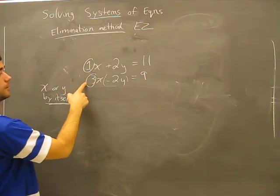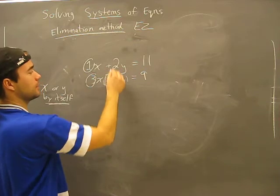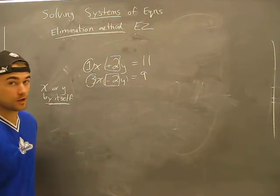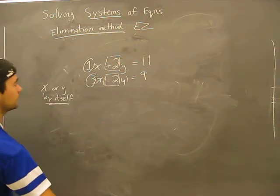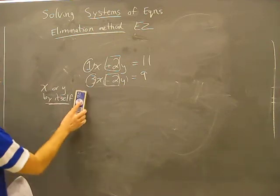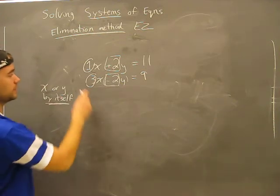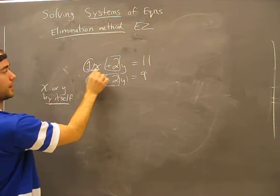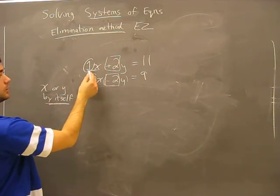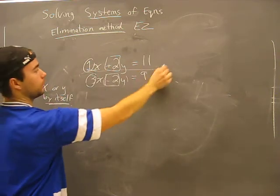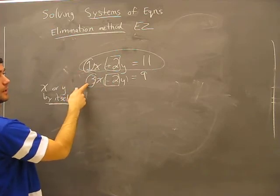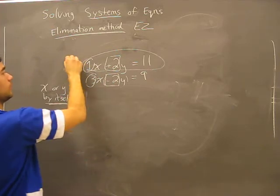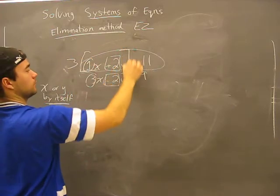The trick to eliminating is you want to get the coefficients to be the same number. I have a 1 there and a 3 there. I have a negative 2 and a positive 2 here, they're not the same, don't get fooled. What I'm going to do, the easiest way to do is find the one that has a single 1. What I'm going to do is multiply this top equation, this whole thing by 3, so that it looks the same as this.